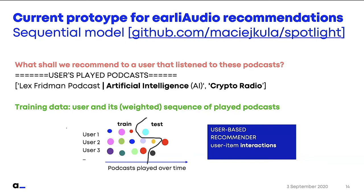How do we use this model? We want to know: given the history of podcasts that the user has listened to, what would be the best podcast to recommend? Let's say a user has listened to Lex Fridman's Artificial Intelligence podcast and also to Crypto Radio podcast — what would be a good recommendation? The model is trained on sequence data: the history of listenings of all users. We also include weights, meaning if you listen to a whole podcast you get a larger weight than if you just listen for the first few seconds and stop.